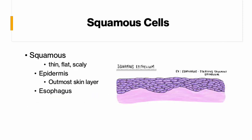Squamous cells are thin, flat, and scaly. They are usually found on the outermost layer of the skin and in the esophagus. They're found in those areas because they are very thin and scaly and can take a lot of beating, and they're always continuously making more of themselves. Areas that take a lot of hits usually have squamous cells — your skin gets hit and bumped, and your esophagus is always getting brushed by food.